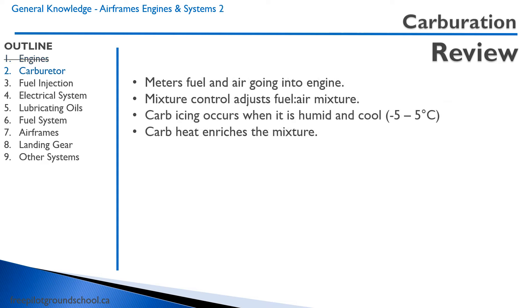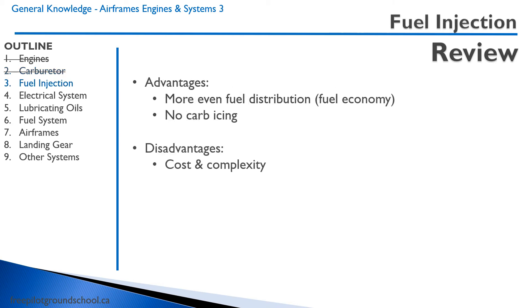Let's review. The carburetor meters fuel and air going into the engine. The mixture control adjusts the fuel-air mixture. Carburetor icing occurs when it is humid and cool out, and the carburetor heat enriches the mixture. The fuel injection system has advantages of more even fuel distribution, resulting in better fuel economy, and no carburetor icing. Its disadvantages are cost and complexity.